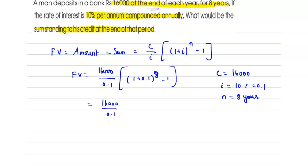Then 16,000 divided by 0.1 is 1,60,000. So upon simplification...